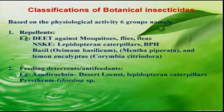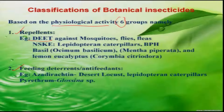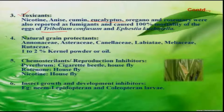Based on their physiological activity, botanical insecticides can be grouped into six groups. The first is repellents — most botanicals act as repellents, and DEET is commercially available against mosquitoes, flies, and other insects. The next group is feeding deterrents, also called antifeedants — the best known example is azadirachtin, which acts as an antifeedant and sometimes even as a repellent. Some botanicals act as toxicants, where 100 percent mortality is possible — for example, eucalyptus can produce up to 100 percent control in stored grain pests like Tribolium confusum.